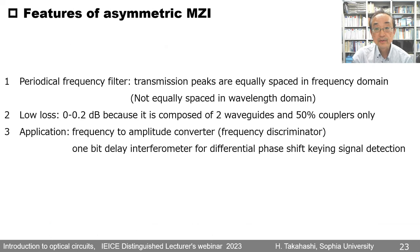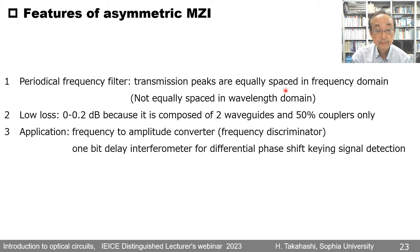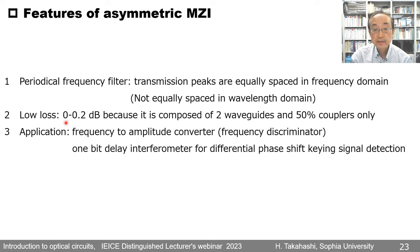Features of the asymmetric Mach-Zender interferometer: First, it is a periodic frequency filter — transmission peaks are equally spaced in the frequency domain (note: not equally spaced in wavelength domain). Second, it has low propagation loss — 0.0 dB because it is composed of only two waveguides and 50% couplers. Applications include use as a frequency-to-amplitude converter, also called a frequency discriminator, and as a one-bit delay interferometer for differential phase shift keying signal detection.